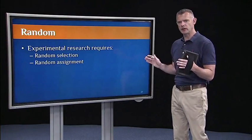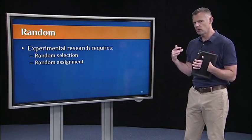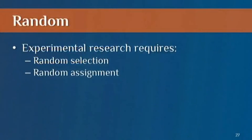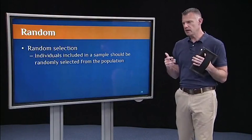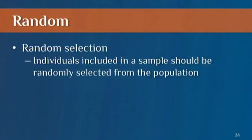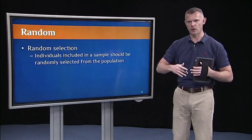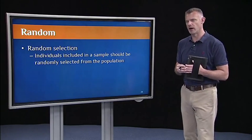As mentioned in the first two segments of lecture one, experimental research critically depends upon random selection and random assignment. So what do we mean by those? Random selection means that individuals included in a sample should be randomly selected from the population. So in the polio vaccine trials, what that means is we should be randomly selecting children from the entire United States if all children in the United States is the population that we want to make our inferences about.